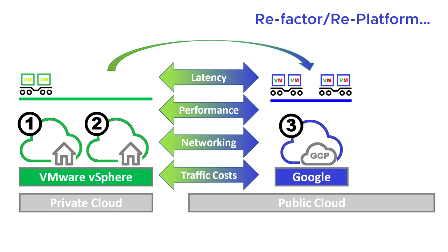The other big consideration is that we've never had to pay for network traffic before. We can use as much bandwidth as we want and do as much communication between applications without worrying about cost. But now, traffic in and out of the cloud is a chargeable service. For some organizations, traffic costs can actually be more expensive than compute and storage. This can come as a surprise and possibly make the whole exercise worthless, because not only have we increased latency and affected performance, but we've also increased costs.